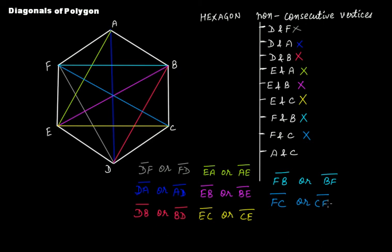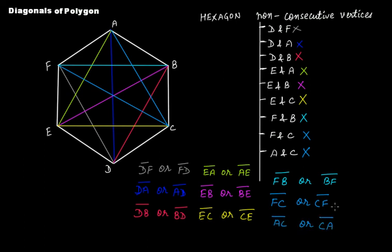Then f and c — line segment fc is another diagonal. And finally a and c — line segment ac. So counting: one, two, three, four, five, six, seven, eight, and nine. In the case of a six-sided polygon, that is a hexagon, you have nine diagonals.